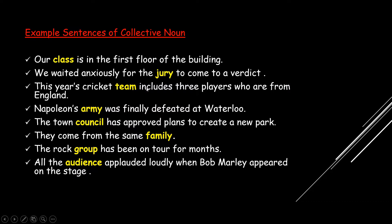This year's cricket team includes three players who are from England. Napoleon's army was finally defeated at Waterloo. The town council has approved plans to create a new park. They come from the same family. The world group has been on tour for months. All the audience applauded loudly when Bob Marley appeared on the stage. All these highlighted words do not represent a single person or thing — they represent a group. Class, jury, team — everything represents a group.